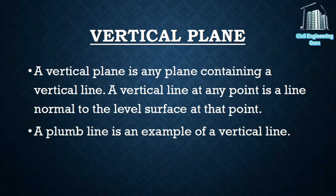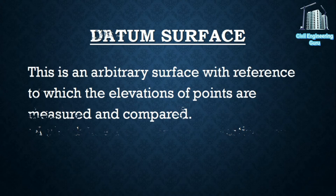Vertical plane: a vertical plane is any plane containing a vertical line. A vertical line at any point is a line normal to the level surface at that point. A plumb line is an example of a vertical line.